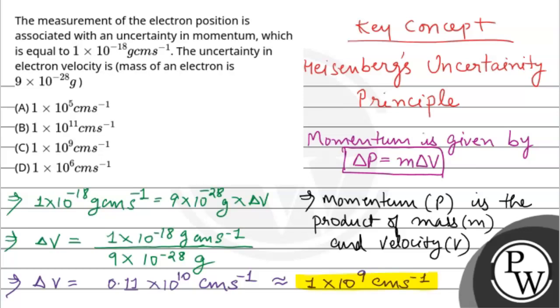So this is the final answer: 1 × 10^9 centimeter per second. The final answer is C. Hope you understand it well. Best of luck.